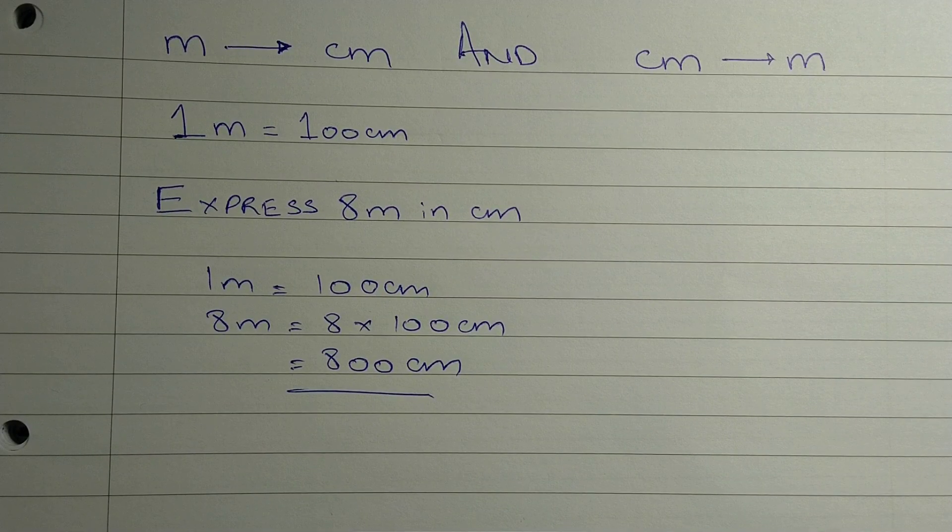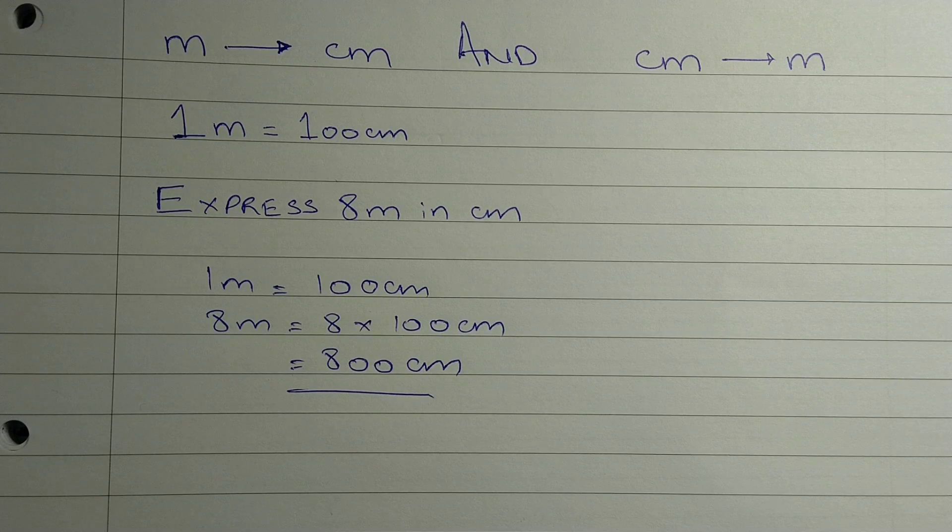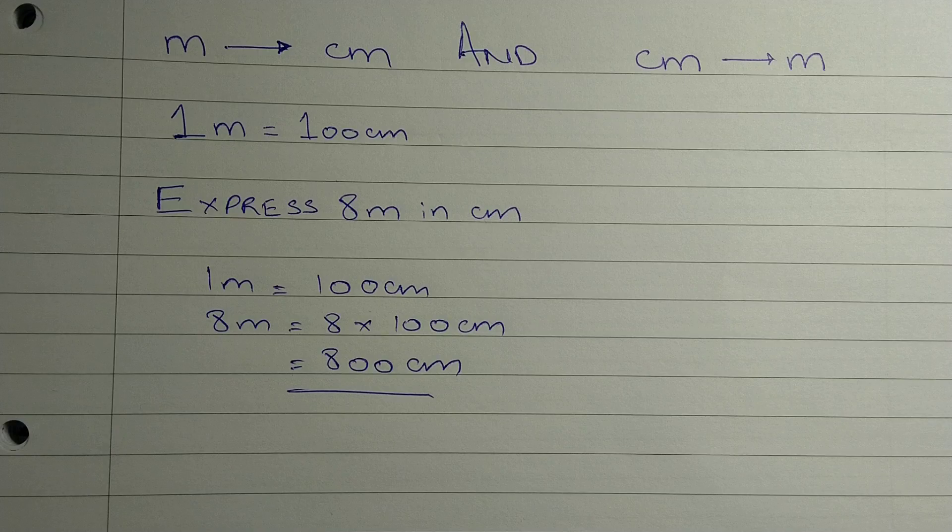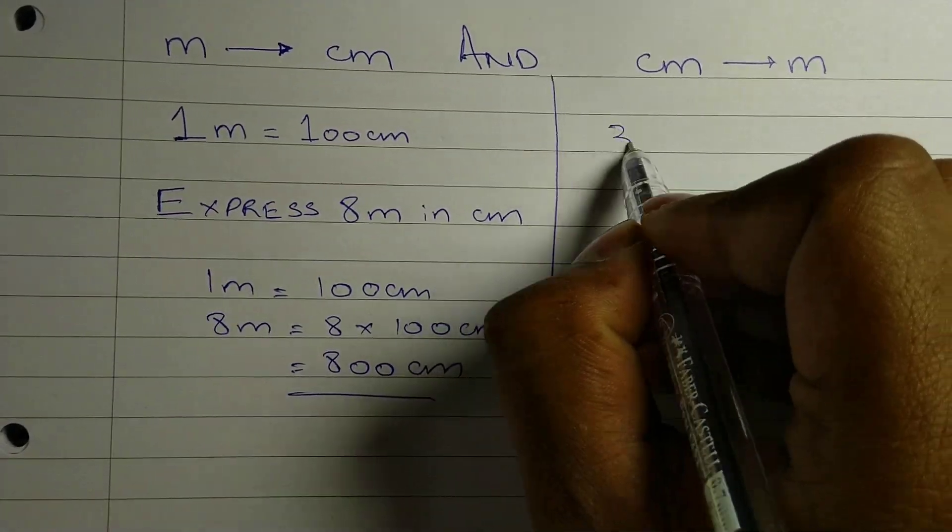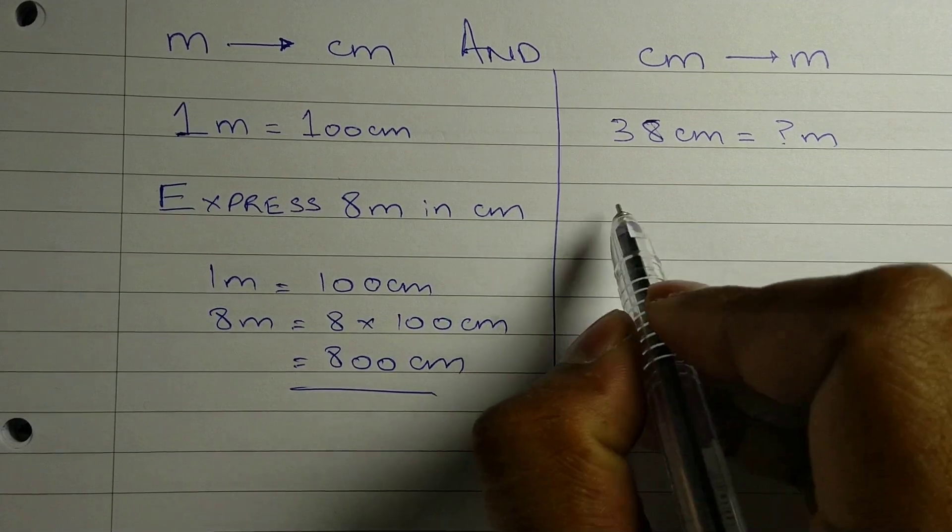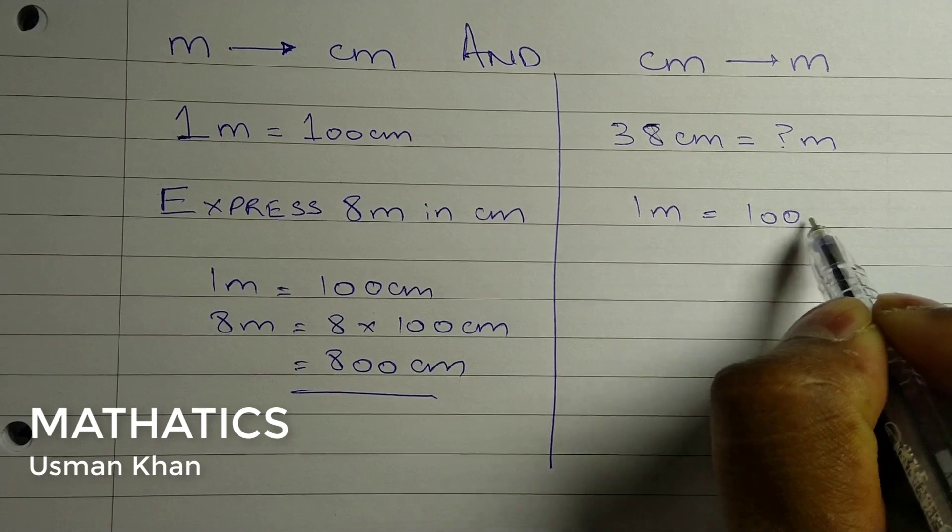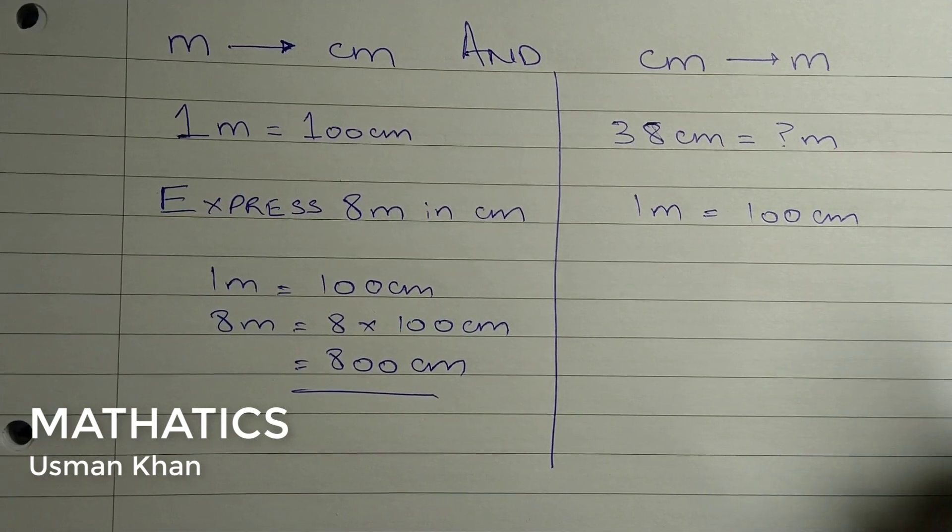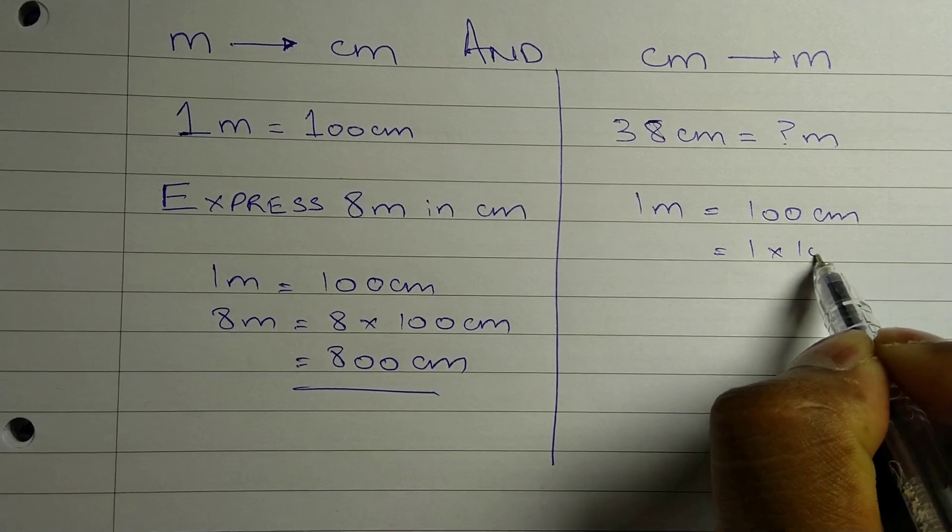If you get a question asking how many meters are in, for example, 38 centimeters, remember one meter equals 100 centimeters. We can also write this as 1 multiplied by 100 centimeters.